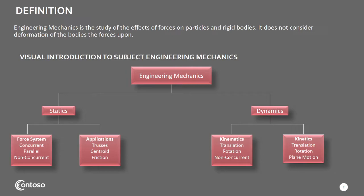Engineering mechanics is divided into two parts: statics and dynamics. In statics, we deal with the equilibrium of bodies under the action of forces — bodies that are either at rest or moving with constant velocity. The branches of statics include force systems and their applications, which allow us to analyze and solve problems like trusses, centroids, and fractions.